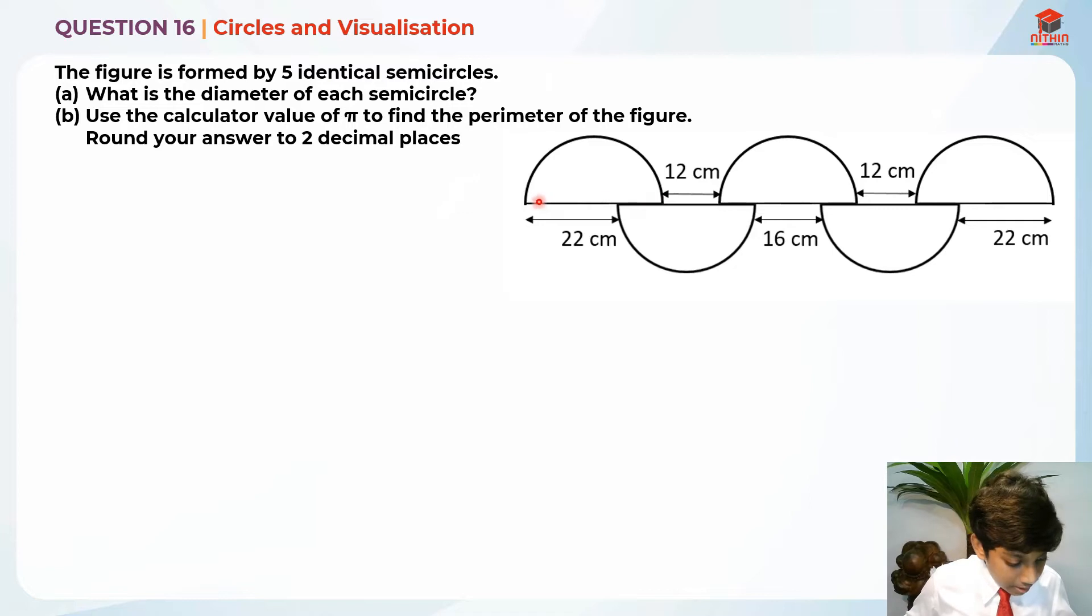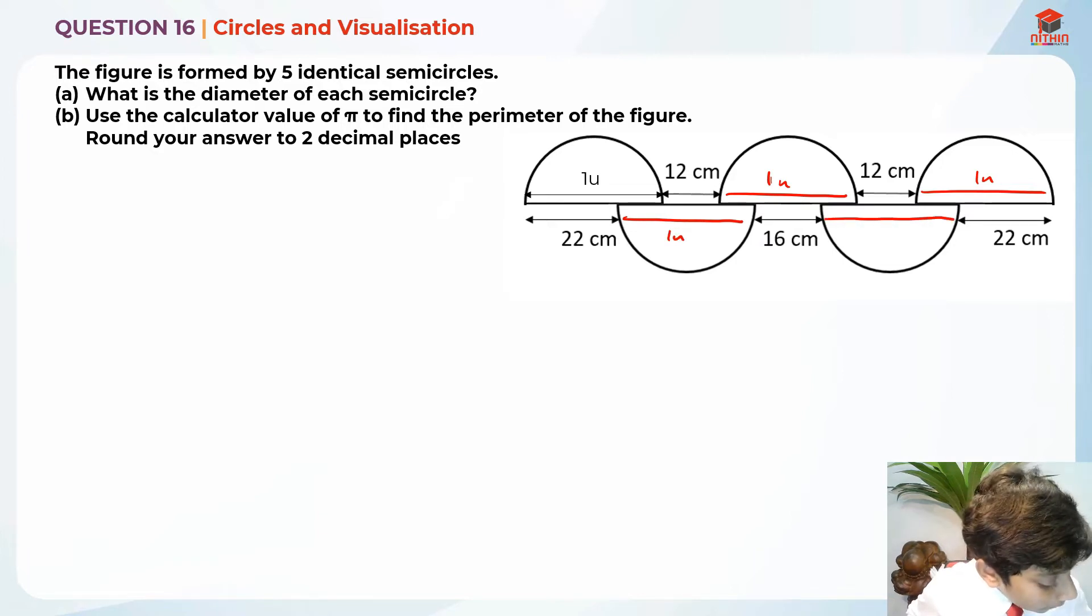The diameter is basically this length, right? So I'm going to label the diameter as one unit, and same applies to all the others. This is one U, this is also one U, this is one U, and this is one U. So we are supposed to find one unit.